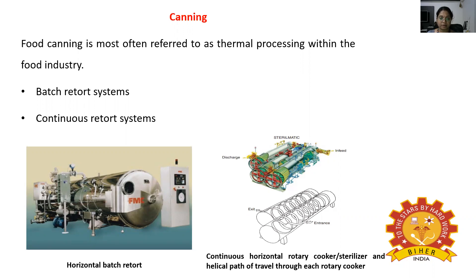Two types of systems are described: batch retort systems and continuous retort systems. Batch systems are made up of individual batch retorts that operate intermittently, while continuous systems are automatically fed into and out of retort systems that operate continuously. The figures show a modern horizontal batch retort and a cutaway view of a continuous horizontal rotary cooker or sterilizer, along with a schematic representation of the helical path of travel through each rotary cooker.